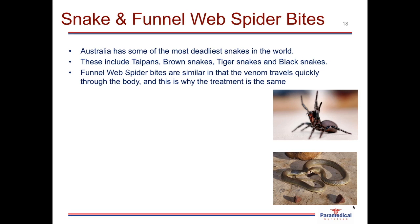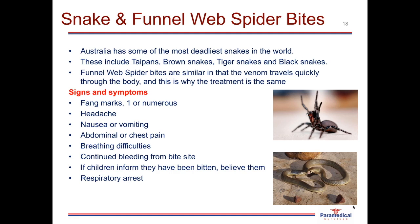Australia has some of the world's deadliest snakes, including taipans, brown snakes, tiger snakes, and black snakes. Funnel-web spider bites have similar venom and are treated the same way. Signs and symptoms can include fang marks or puncture marks which may look like a scratch, headaches, nausea and vomiting, abdominal or chest pain, breathing difficulties, and continued bleeding from the bite site. These snakes and the funnel-web spider can ultimately result in respiratory arrest leading to cardiac arrest. If children say they've been bitten by a snake or spider, believe them.